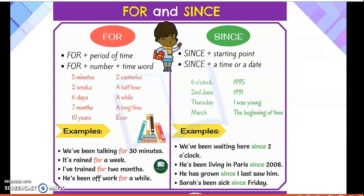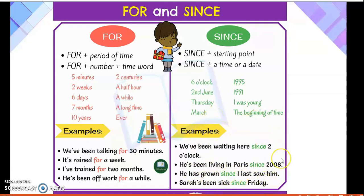Now let's move to 'since.' We use 'since' when we are talking about the starting point — when we start our work. It can be a time or a date. For example, 'we have been waiting here since two o'clock' — that means two o'clock is the starting point where we began waiting. In all these examples, we are discussing the starting point when the action took place.